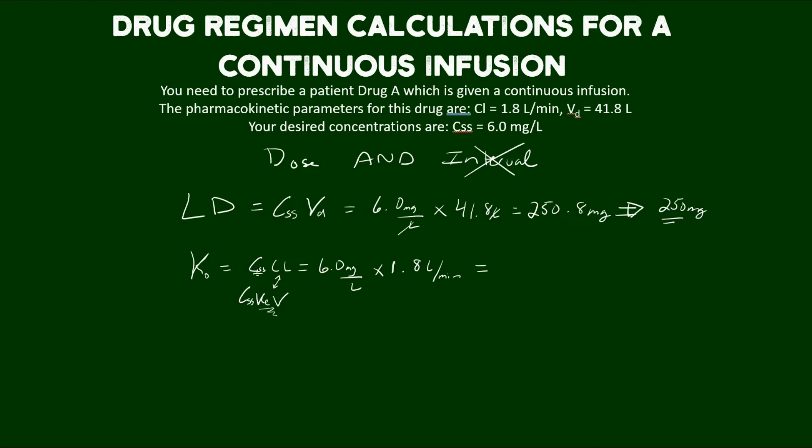So it's 6.0 milligrams per liter, that's our desired steady state concentration, times 1.8 liters per minute. Liters cancel out. And that equals 10.8 milligrams per minute. And this may or may not be rounded, depending on the context and this actual scenario and real life drug you're using to perhaps 10 milligrams per minute.